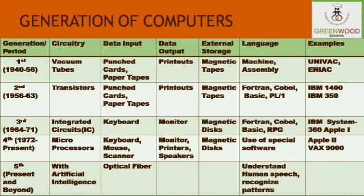The first generation computers were evolved in the year 1940 to 1956 and used vacuum tubes. Second generation computers were introduced from 1956 to 1963 and used transistors. Third generation computers used ICs — integrated circuits — and evolved from 1964 to 1971. The keyboard and monitors were introduced from third generation computers. Before that, punch cards and paper tabs were used for input, and printouts for data output.